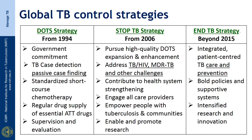Looking at the global TB control strategies, starting in the early nineties we had the DOTS strategy, which included political and governmental commitment for control of the disease. TB case detection was through passive case finding, and standardized short-course chemotherapy was used for treatment of TB patients. Regular drug supply was ensured for essential anti-tuberculosis treatment drugs, and supervision and evaluation were the focus during the DOTS strategy.